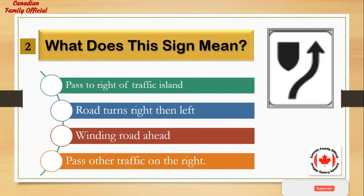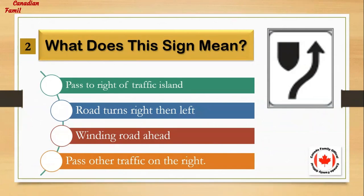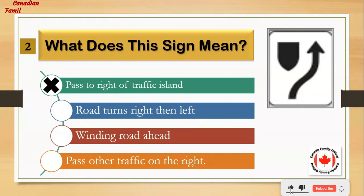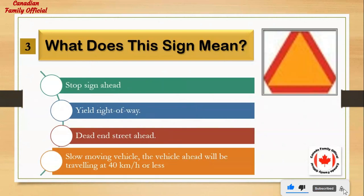What does this sign mean? Number 1: pass to right of traffic island. Number 2: road turns right then left. Number 3: winding road ahead. Number 4: pass other traffic on the right. And the answer is: pass to right of traffic island.